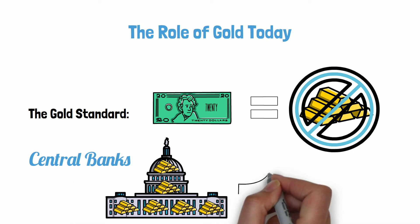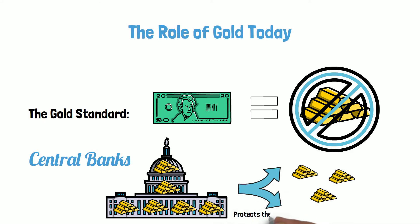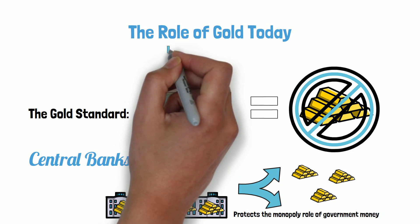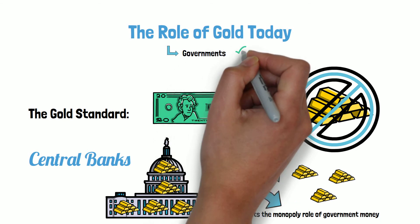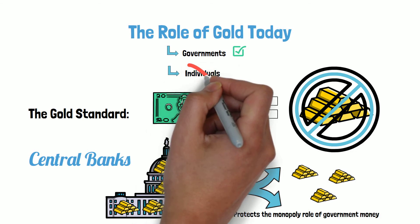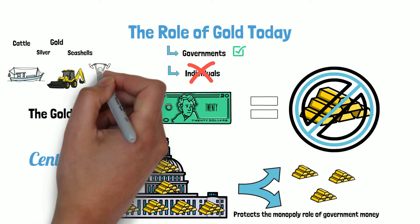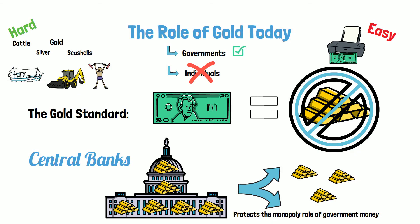Under the gold standard, money represented an amount of gold, but the money citizens use today does not directly represent gold. Today, central banks around the world have far more gold in their reserves than they did under the gold standard. The central bank's large reserves can be used as an emergency supply to sell or lease on the gold market to prevent the price of gold from rising during periods of increased demand, protecting the monopoly role of government money. The problem with government money is that you can easily print more — cattle, silver, gold, and seashells all required serious effort to produce, whereas government money is extremely easy to produce. As we know, when we increase supply, value goes down.